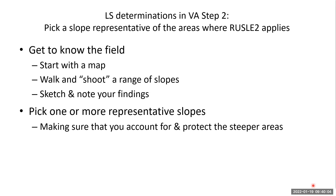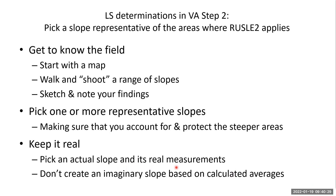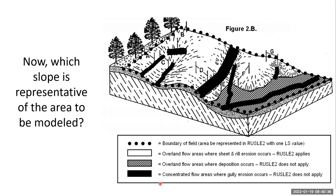As you walk the field and assess different slopes, pick one or more representative slopes, and make sure you account for and protect the steeper areas. If you pick the average slope and plan your erosion treatment for the intermediate slope, the steeper slopes will be under-protected. I recommend you keep it real — pick an actual slope with real measurements and don't create an imaginary slope based on calculated averages. The advantage is that if you ever have to defend your choice of LS value, you can point to a specific, measurable slope.